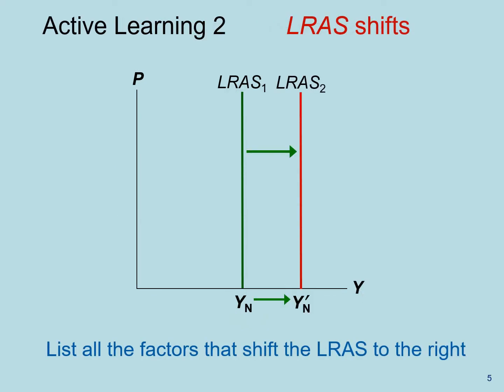For this active learning exercise, I would like you to write down all the factors that shift the long run aggregate supply to the right. Please submit your answers in Tophat before moving on.